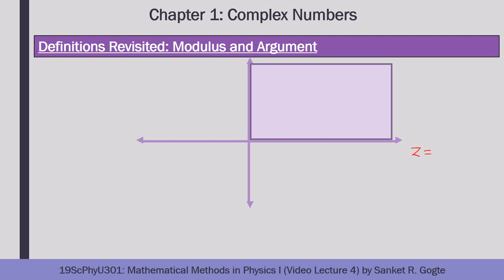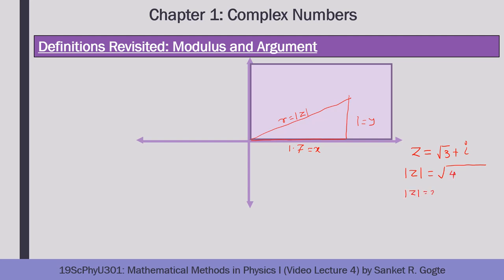Let's consider z = √3 + i, which is in the first quadrant. Plotting it: the real part is √3 ≈ 1.73 and the imaginary part is 1. The modulus |z| = √(3 + 1) = 2. The argument θ = tan⁻¹(1/√3) = π/6 radians.